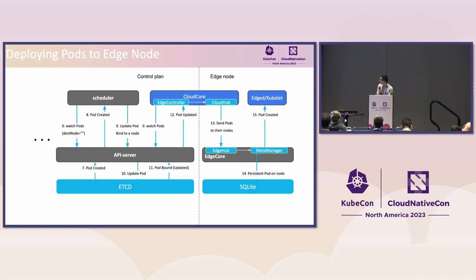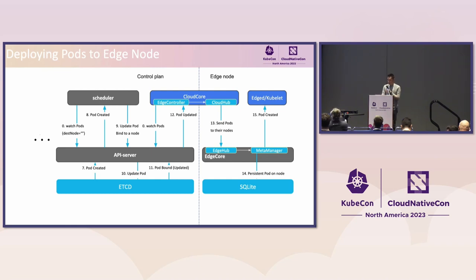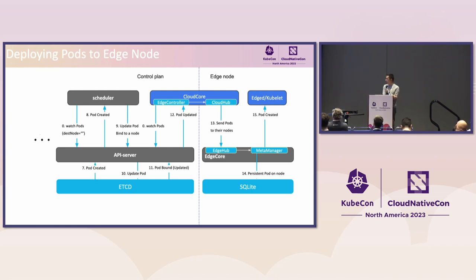The CloudCore is the new Kubernetes edge component. The edge controller watches for pod desired-state updates, then communicates through our protocol from the CloudHub to the EdgeHub. EdgeCore then handles the local deployment update. If you want to update desired state on the edge node, EdgeCore is responsible for pod creation, similar to kubelet. As an application developer, you don't need to change anything — it's just like deploying on Kubernetes.